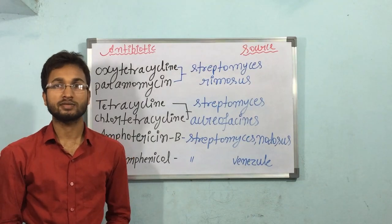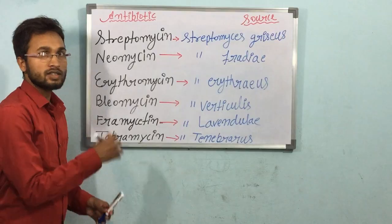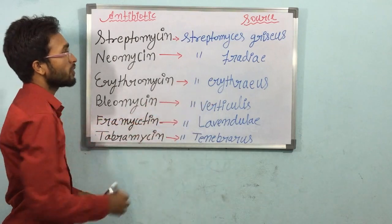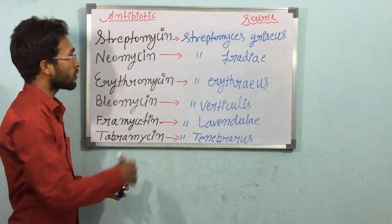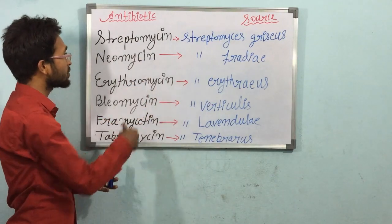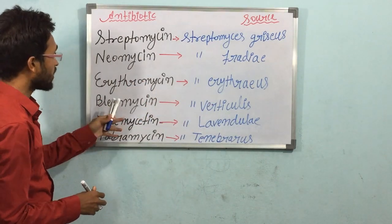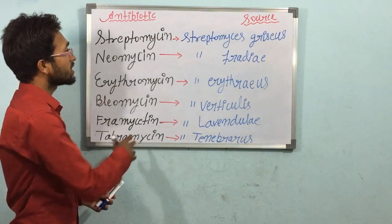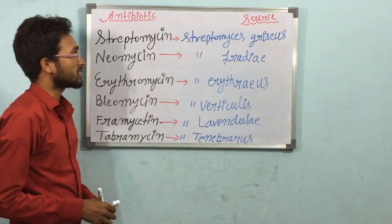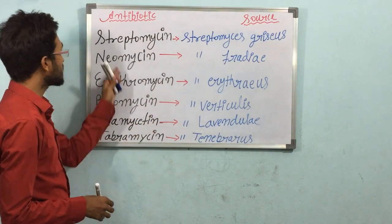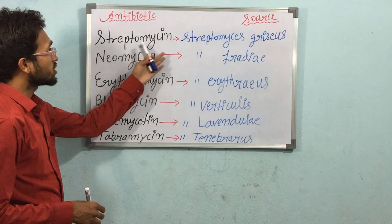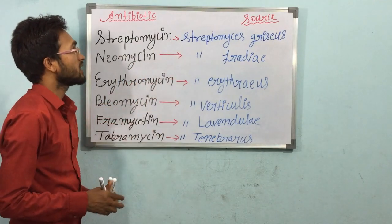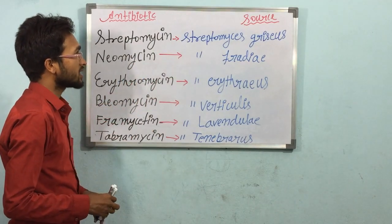Let's see the next drugs. For every antibiotic there is a microorganism from which we get it. For Streptomycin, the microorganism name is Streptomyces griseus.